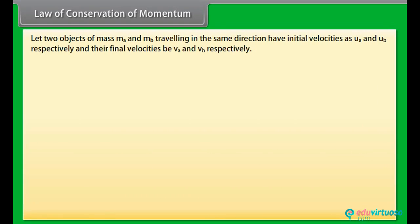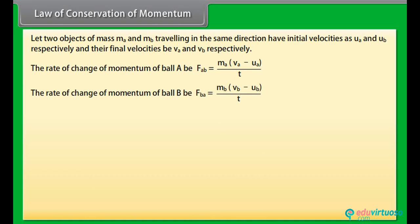Let two objects of mass ma and mb traveling in the same direction have initial velocities as ua and ub respectively. The rate of change of momentum of ball A, Fab = ma(va - ua)/t. The rate of change of momentum of ball B, Fba = mb(vb - ub)/t.